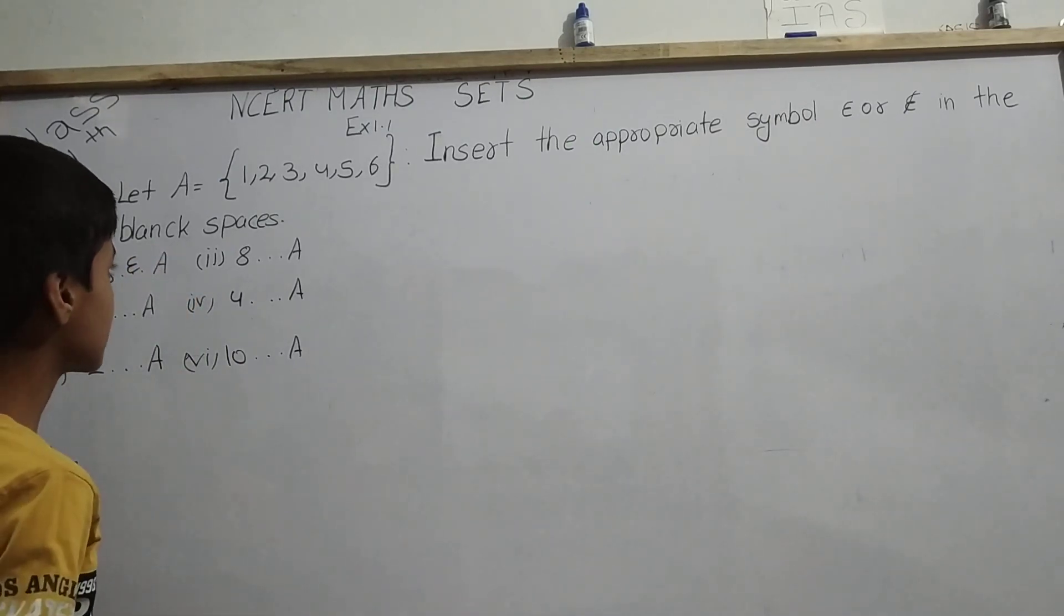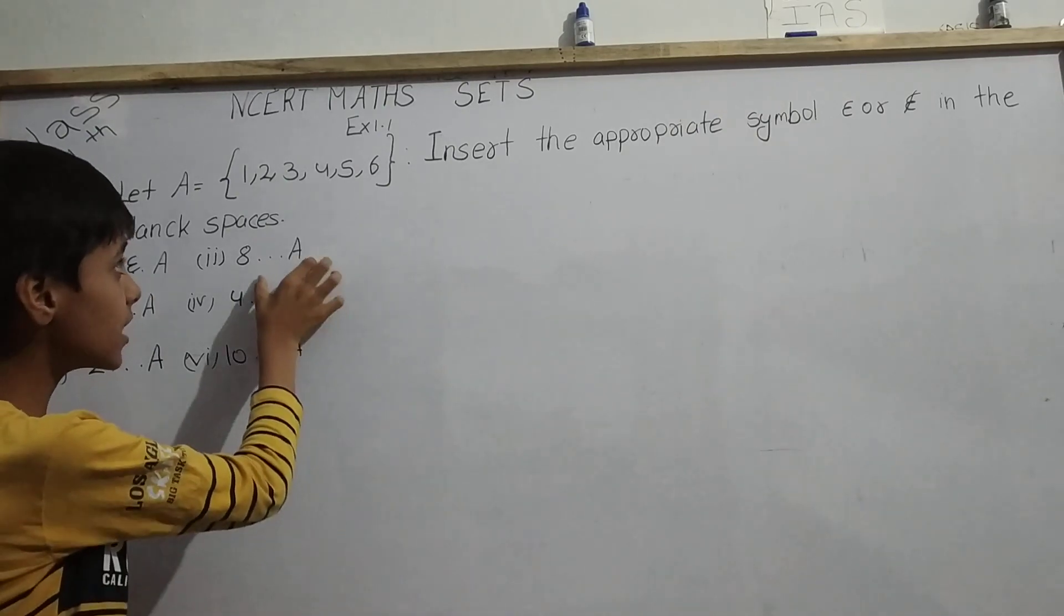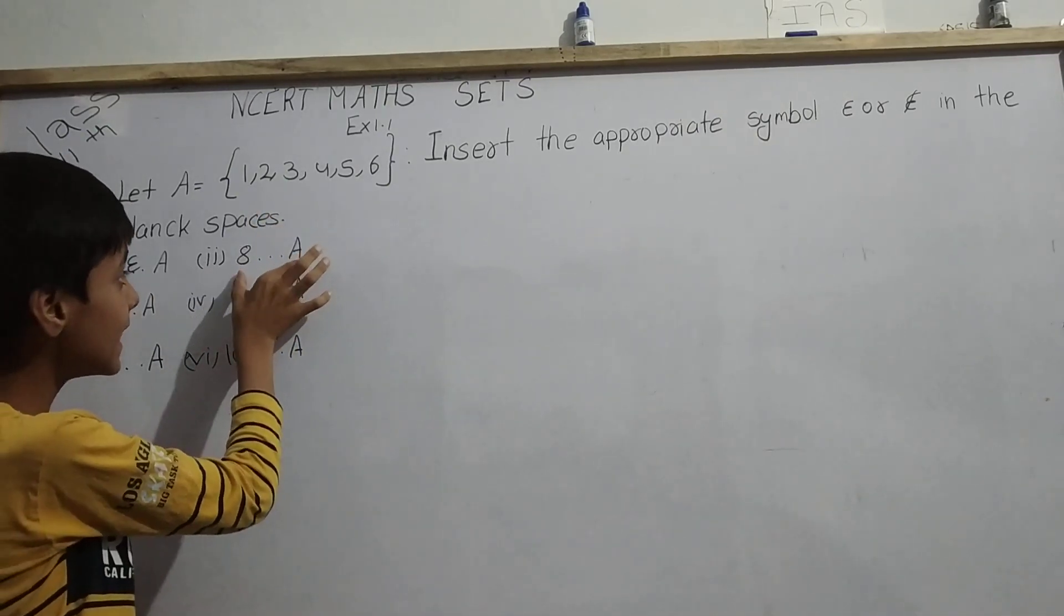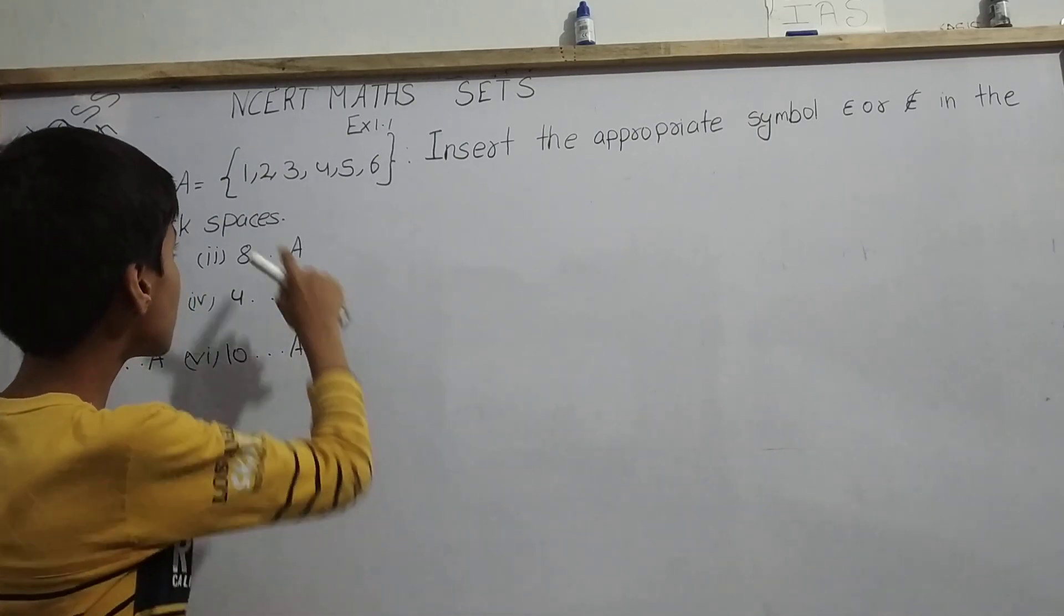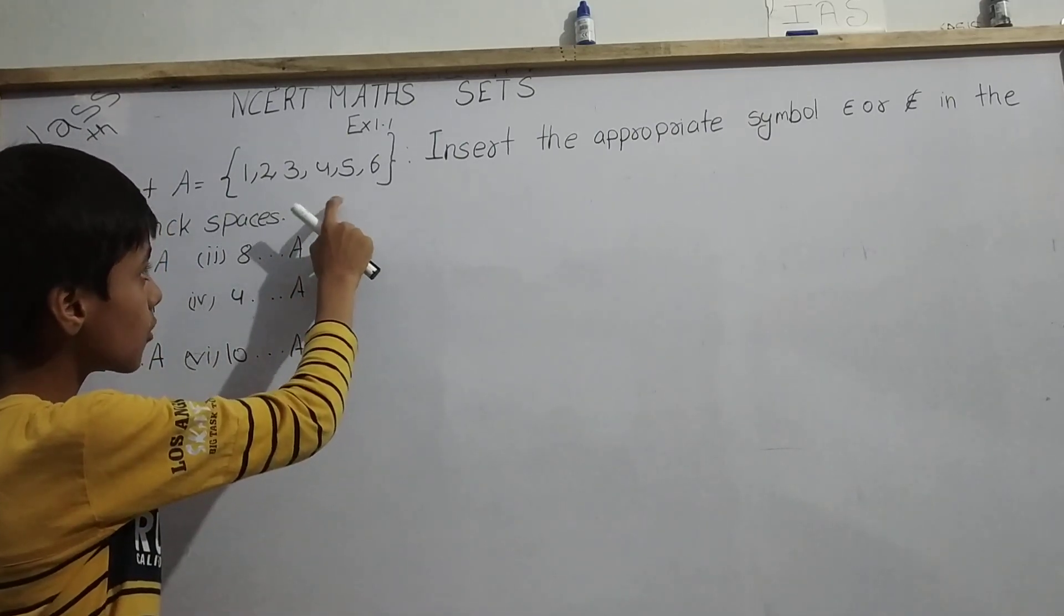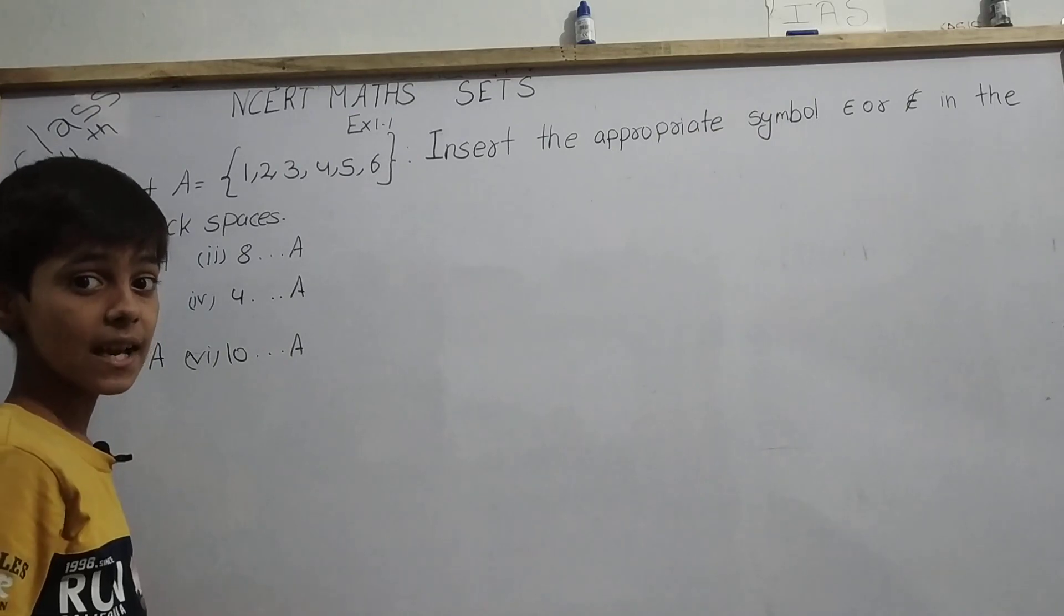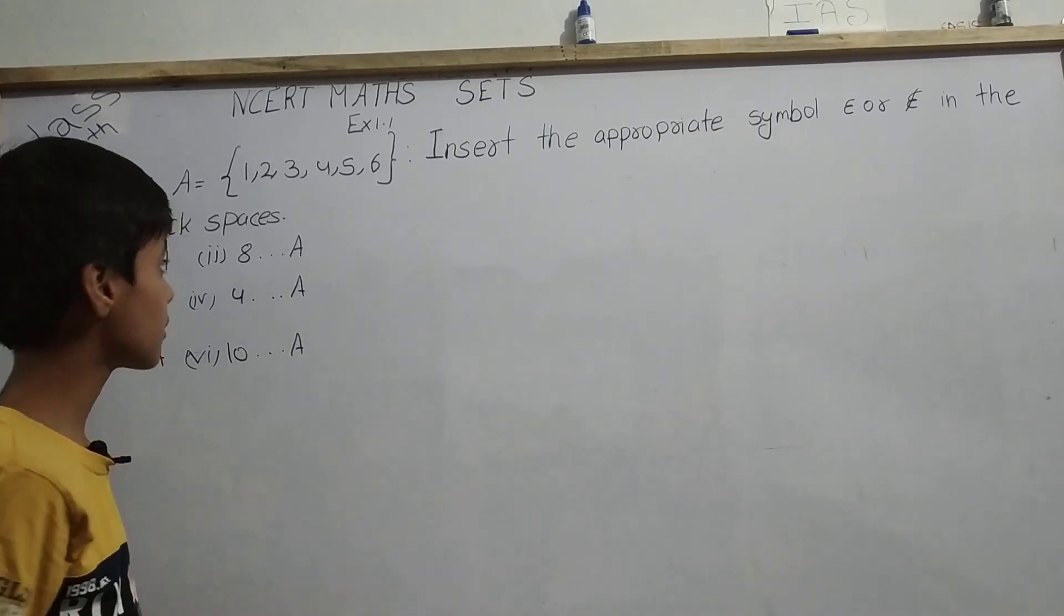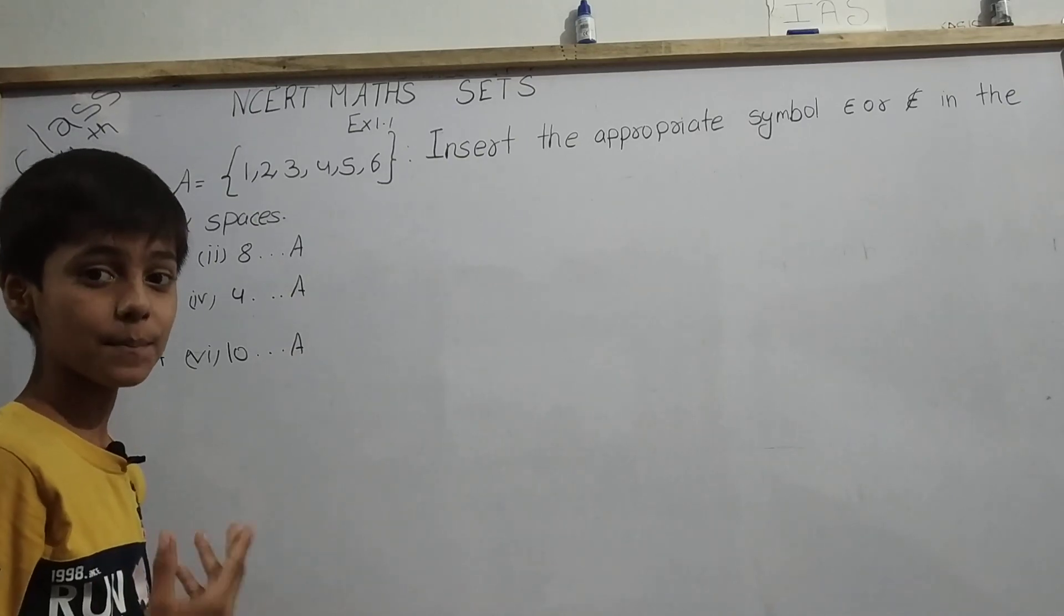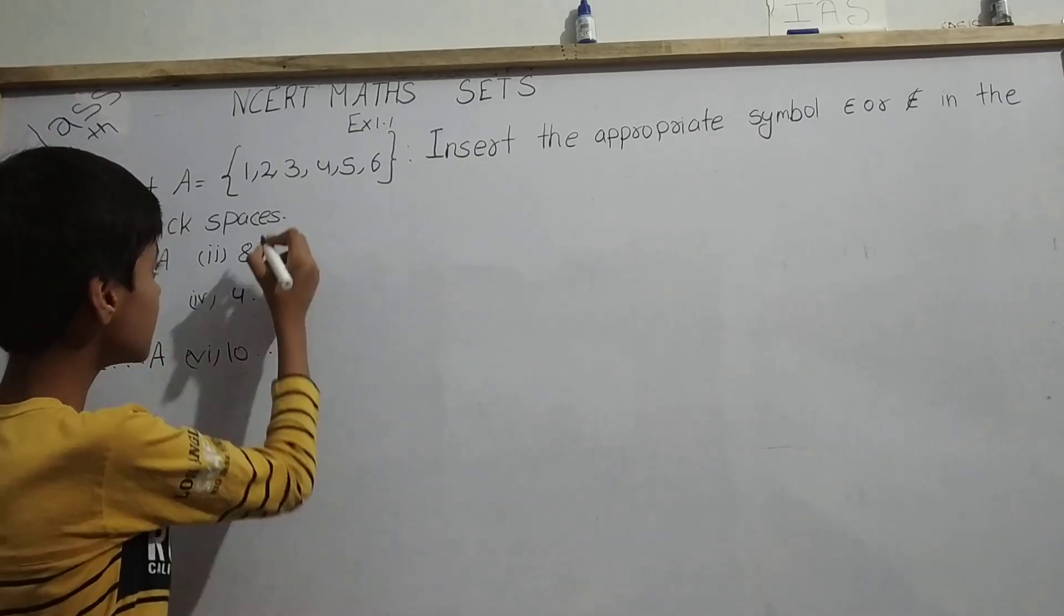Now here it is 8 dash A. We have to check whether 8 belongs to A or does not belong to A. Here we have only 1, 2, 3, 4, 5, 6. After that it hasn't gone forward to 7, 8. This is the main reason we will put the symbol epsilon not.